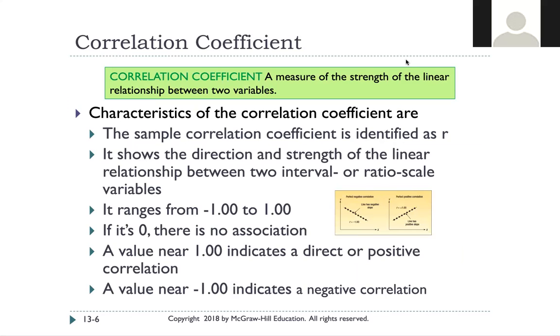So the correlation coefficient is the number that we use that actually tells us the strength of the linear relationship between those two variables. So it's identified as r. So if you ever see a question saying solve for r or r equals this, know that it's your correlation coefficient.